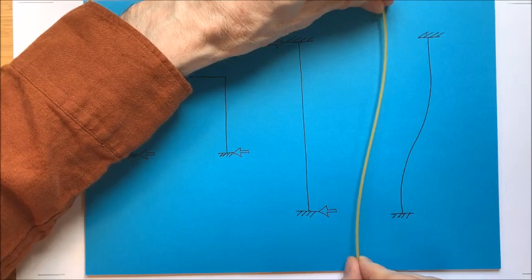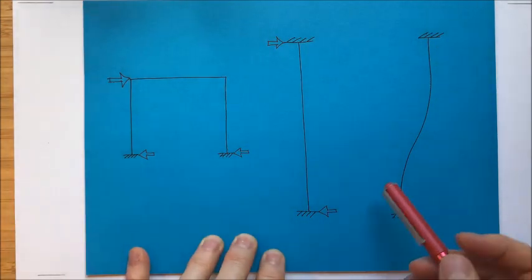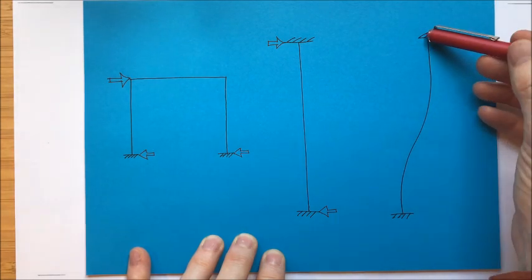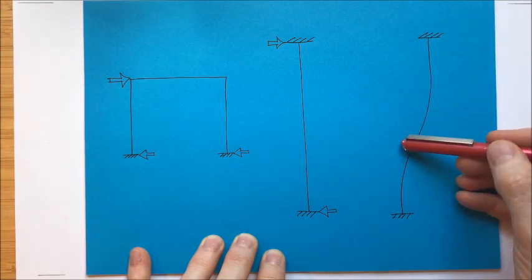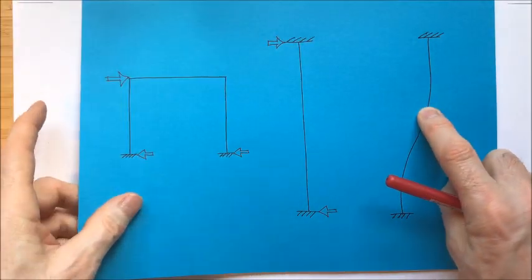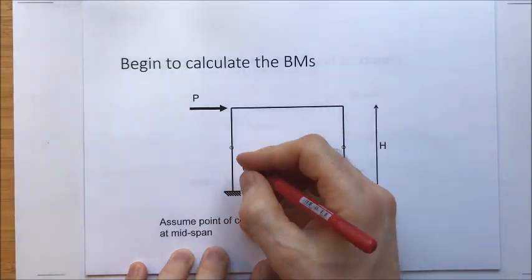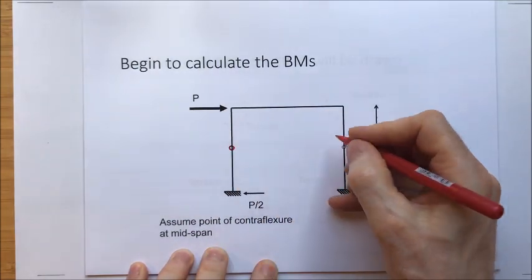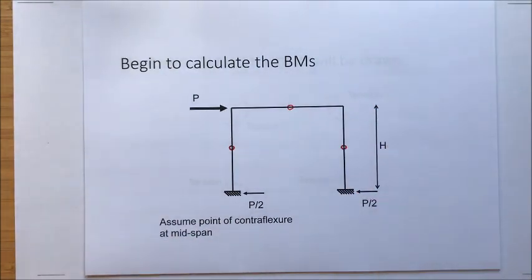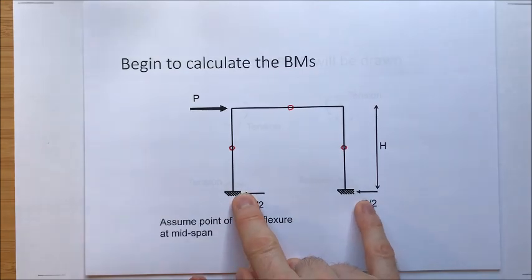This column is fixed at the top and fixed at the bottom. The top is going to move rightwards relative to the bottom, creating an S-shape in the column. There's tension on this face and tension on this face — the bending moment diagram is going to change sign, starting off large, going down to zero, and growing again. We know we can have a point of contraflexure at the center where the bending moment is zero. There are similarly points of contraflexure in the columns and in the beam.